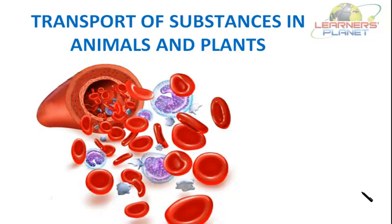Even plants and other organisms have their own way of transporting substances within their bodies. Besides air, there are other substances that also need to be transported in a living body. There are various methods by which plants and animals transport materials inside their body. Our body generates a number of waste products while carrying out its various functions, and these need to be removed regularly, or they will harm the body.